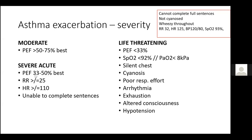Most people are saying severe — correct. I thought the O2 sats of 93% might trick you, but if they were 91% it would go straight to life-threatening, because you only need one criterion from the category above to classify it. In my head: moderate and severe — they're really struggling to breathe but managing to compensate. By the time you get to life-threatening, the body is tired and things are deteriorating: exhaustion, hypotension, low oxygen sats — the body can no longer compensate.